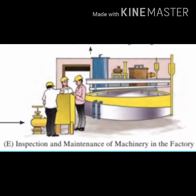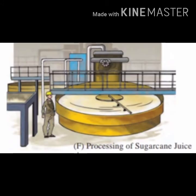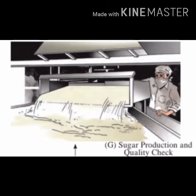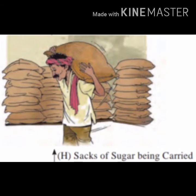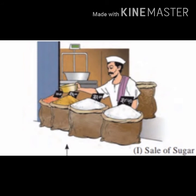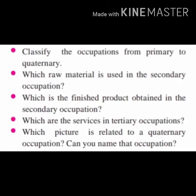E: inspection and maintenance of machinery in the factory. F: processing of sugar cane juice. G: sugar production and quality check. H: sacks of sugar being carried. And I: sale of sugar. Students, let us try to answer the following questions. Classify the occupations from primary to quaternary.